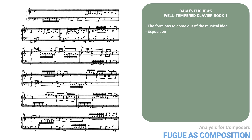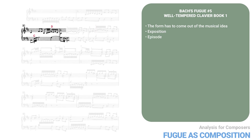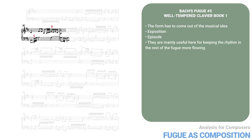The exposition presents the subject four times — in the tonic, the dominant, the tonic, and then the dominant again. There's a little episode within the exposition in measure three. This episode introduces two new motives, which I've labeled C and D. Unlike the school fugue, these motives are often present but not in the systematic way a counter subject normally is. They're mainly useful here for keeping the rhythm and the rest of the fugue more flowing, instead of a bumpy alternation between the quick 32nd notes and the slower dotted note rhythm.